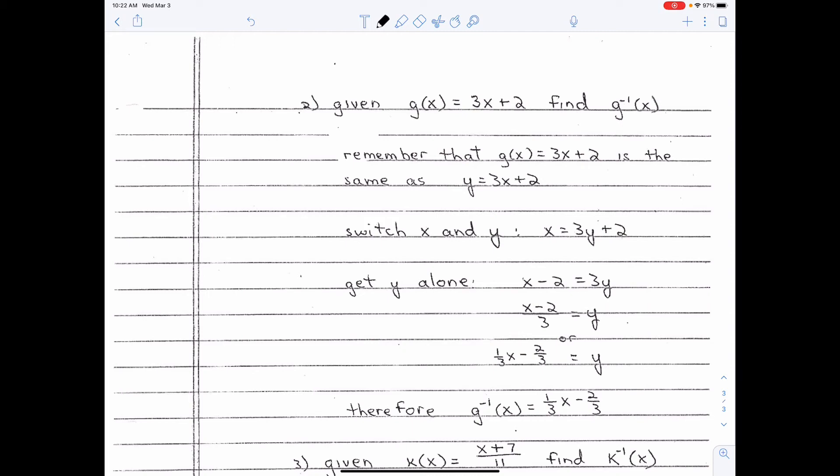So, what we do is wherever there's a y, you put an x, and wherever there's an x, you put a y. Really, that's all it is. You just switch the x and y. And then you get y alone. And then at the end, I don't care if you write y equals one-third x minus two-thirds.